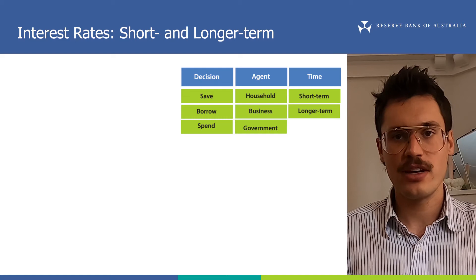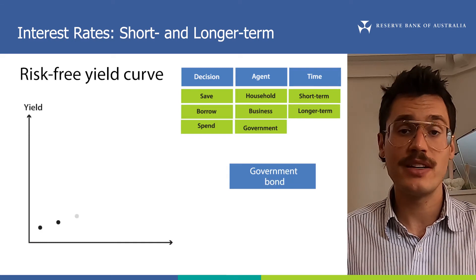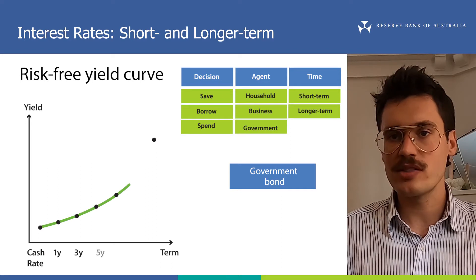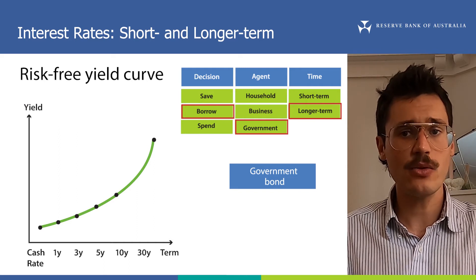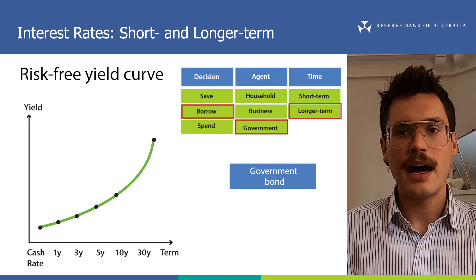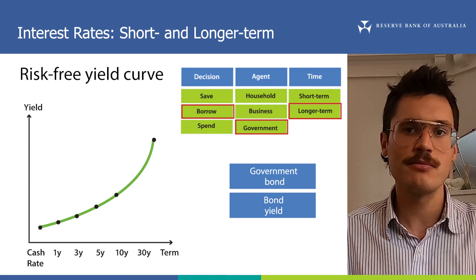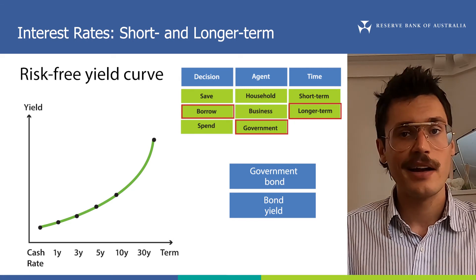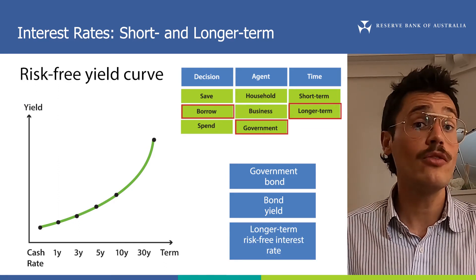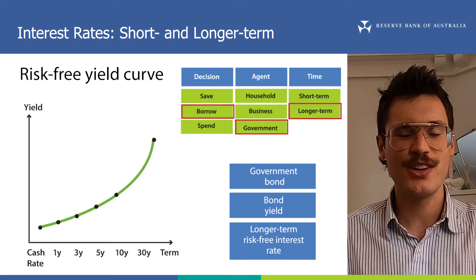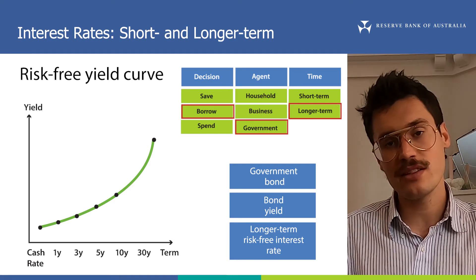To measure longer term risk-free interest rates, we can use something called the risk-free yield curve. The yield curve plots the yield on government bonds over different periods of time, called terms. Government bonds are just a promise by the government to pay an investor money it has borrowed in the future, often for a longer term — in other words, they are a financial asset. A government bond yield measures the benefit an owner of the bond expects to receive each year from owning it, relative to its market price, and is expressed as an interest rate. Government bond yields are the closest thing in financial markets to longer term risk-free interest rates. There's a whole video on bonds and the yield curve presented by my colleague Kate — please watch it to understand the yield curve. The yield curve is a very important bridge for unconventional monetary policy tools to transmit to longer term interest rates.